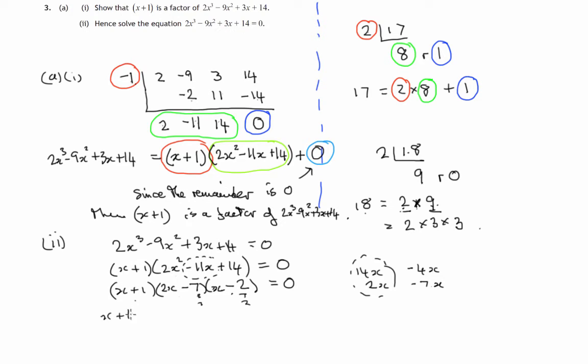So x plus 1 could be zero, or 2x minus 7 could be zero, or x minus 2 could be zero. If x plus 1 was zero, x would be negative 1. If 2x minus 7 is zero, then 2x would equal 7, therefore x is 7 over 2. And if x minus 2 is zero, then x equals 2.